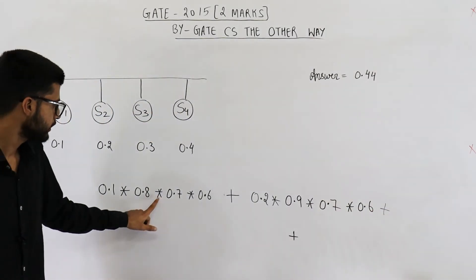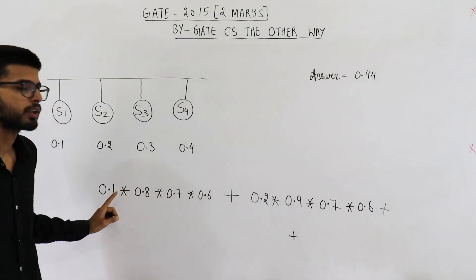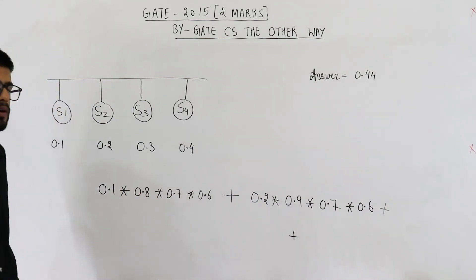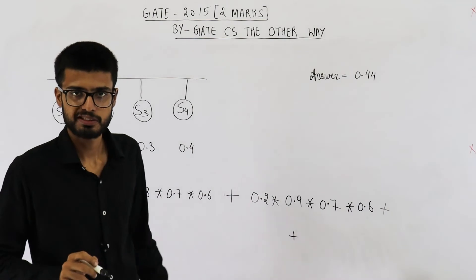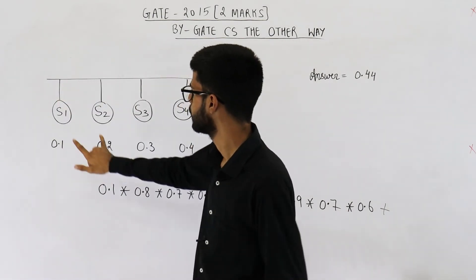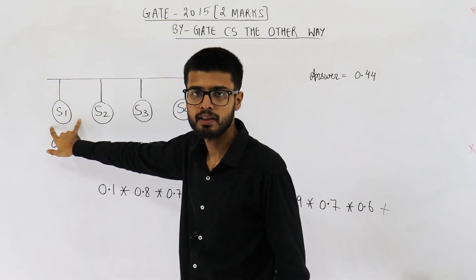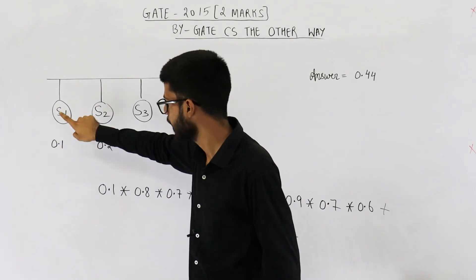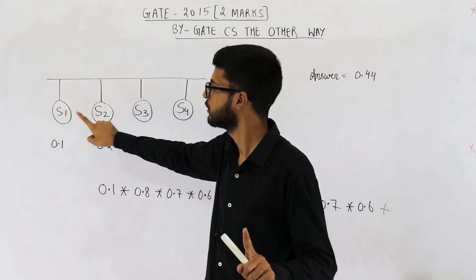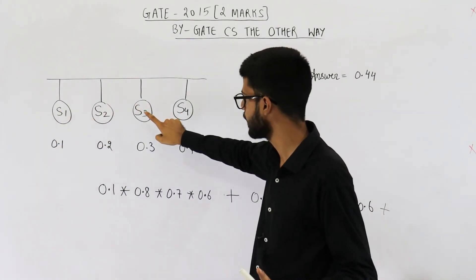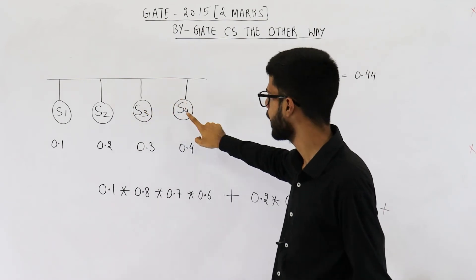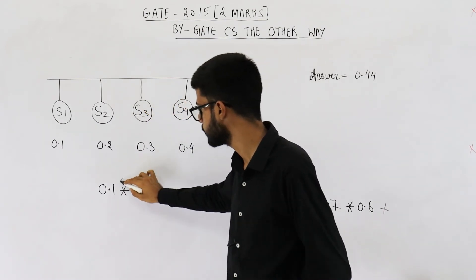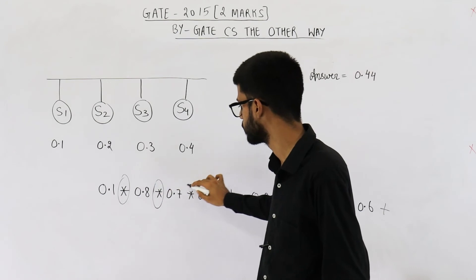And why are we writing a multiply sign between these probabilities? It is because let's analyze the first method only. First method says only S1 is sending data. That means S1 is sending and S2 is not sending and S3 is not sending and S4 is not sending. And means we have to multiply the probabilities.